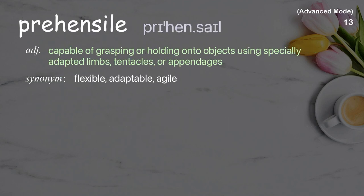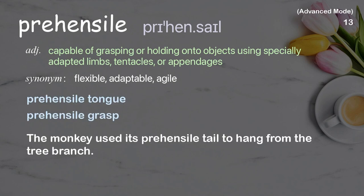Prehensile: Capable of grasping or holding onto objects using specially adapted limbs, tentacles, or appendages. Examples: prehensile tongue, prehensile grasp. The monkey used its prehensile tail to hang from the tree branch.